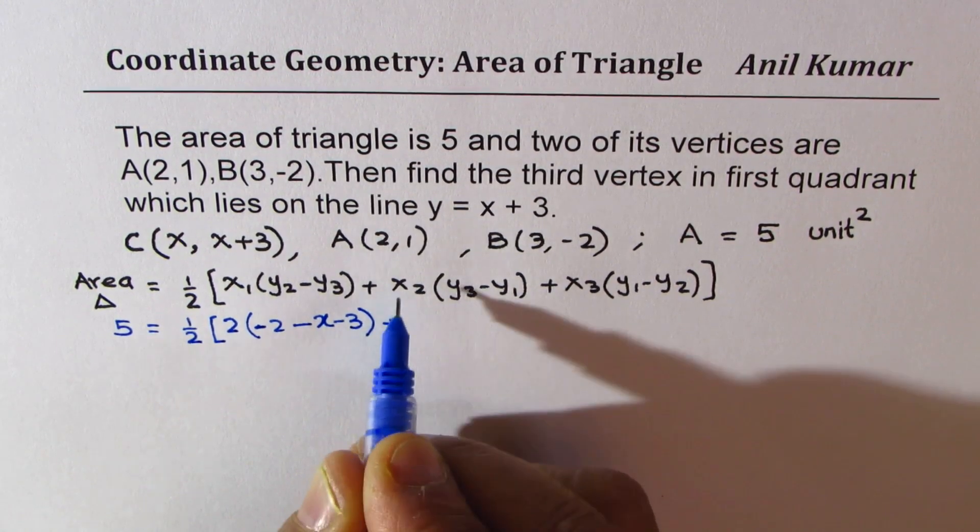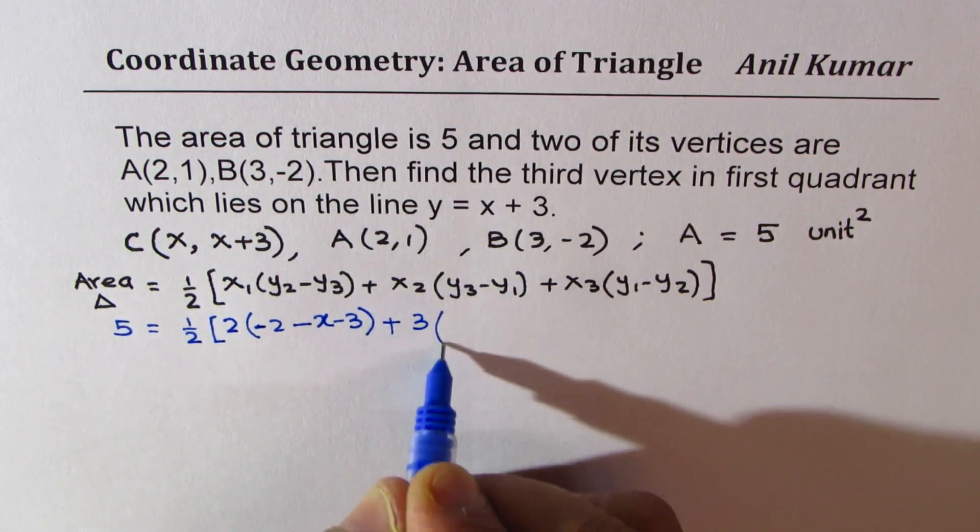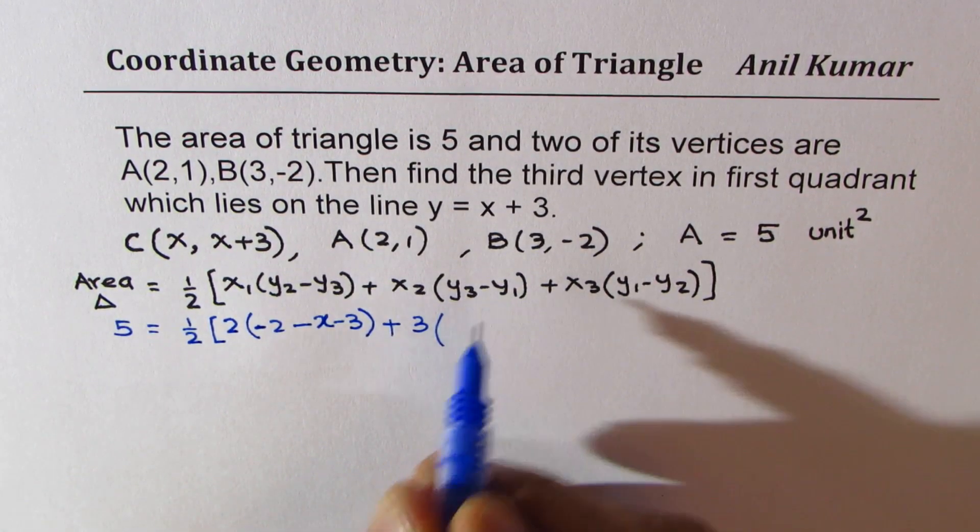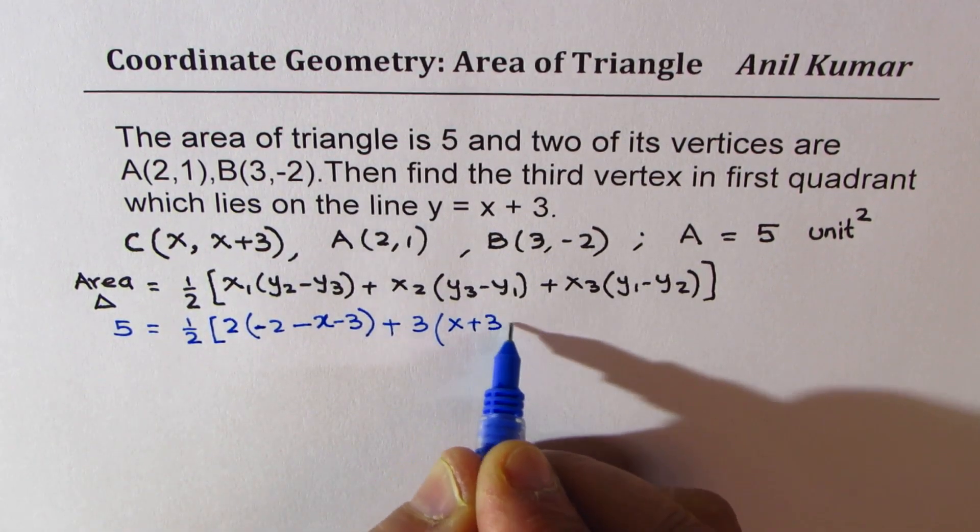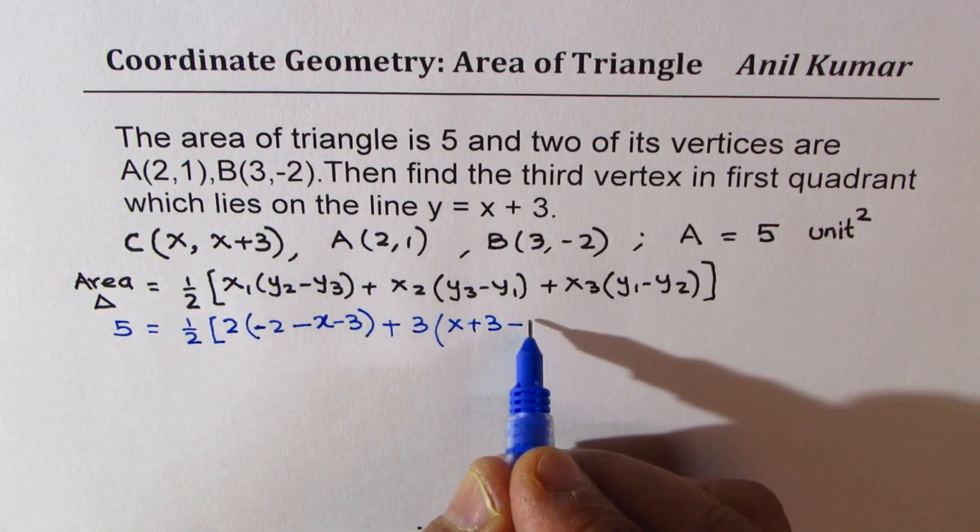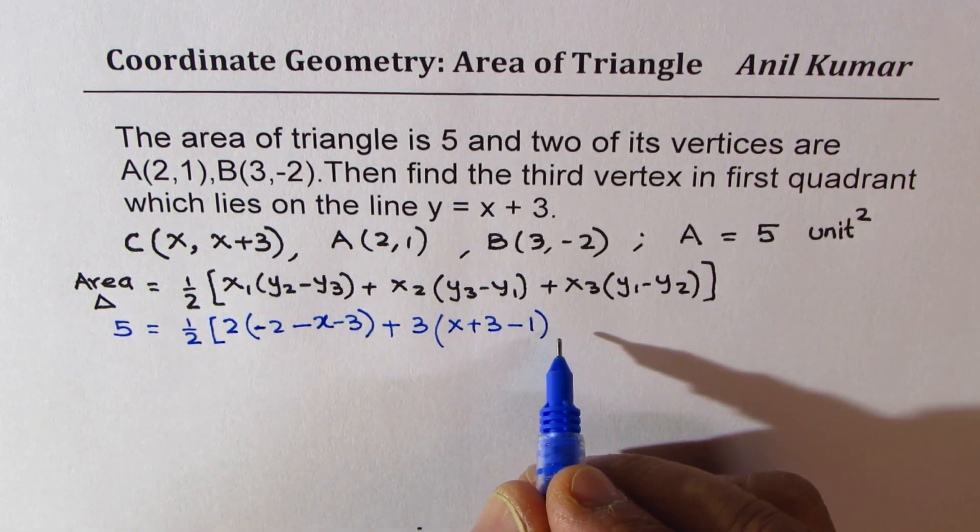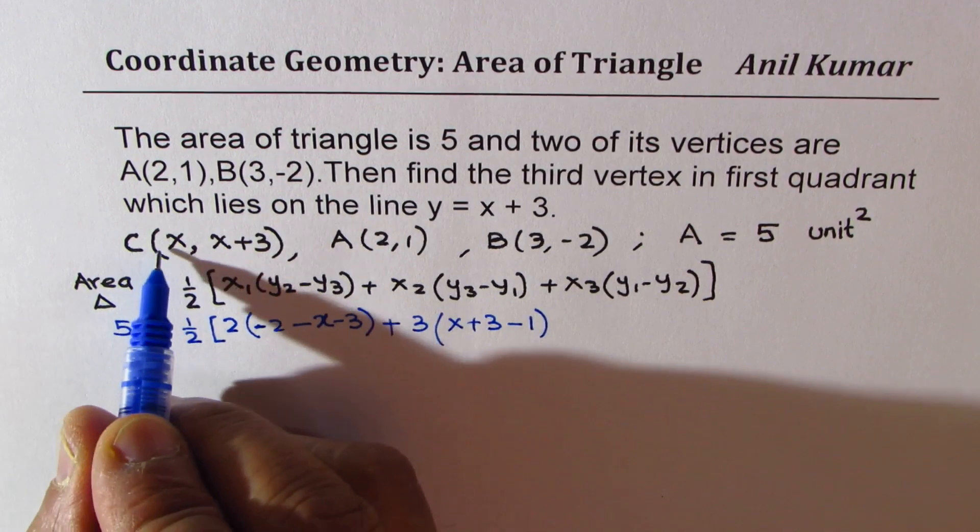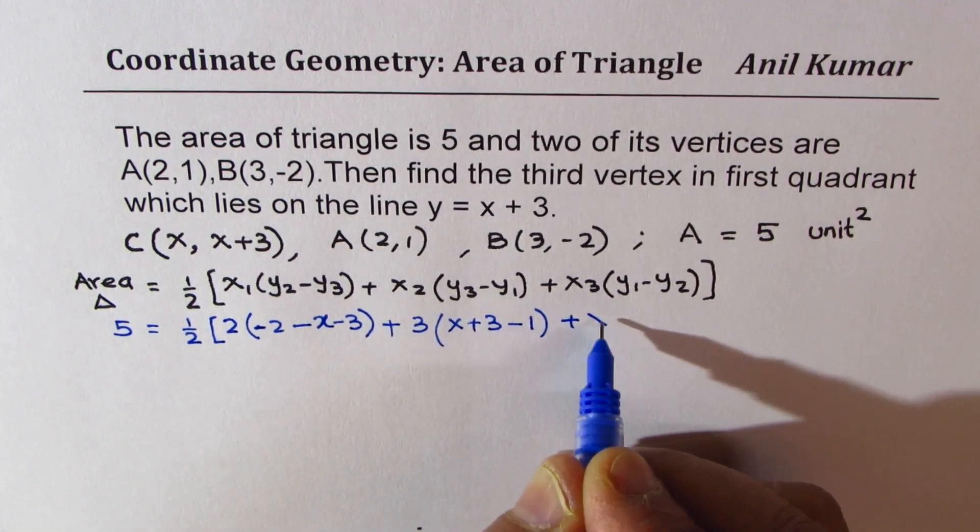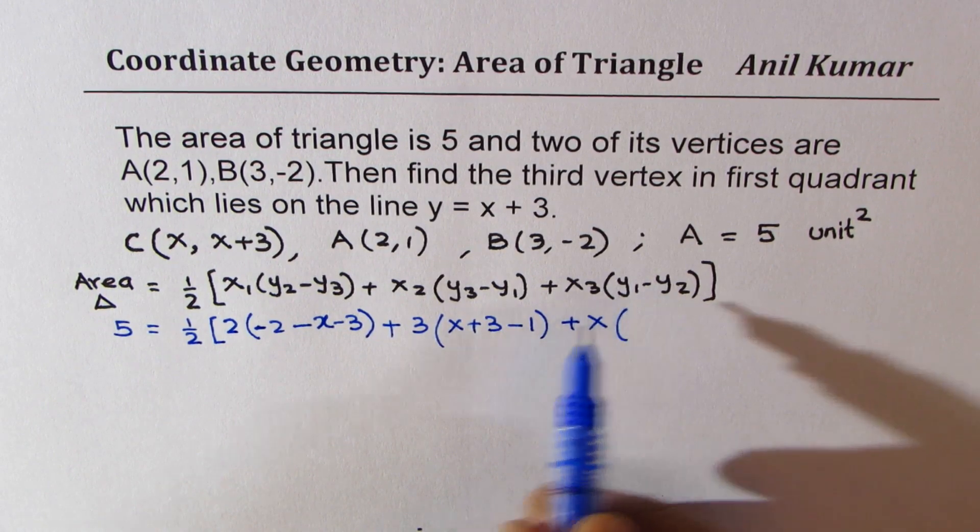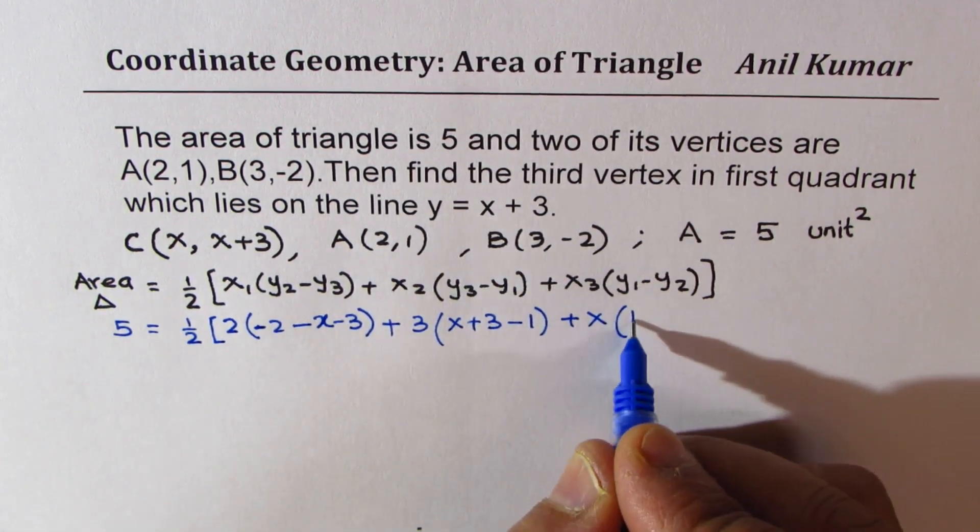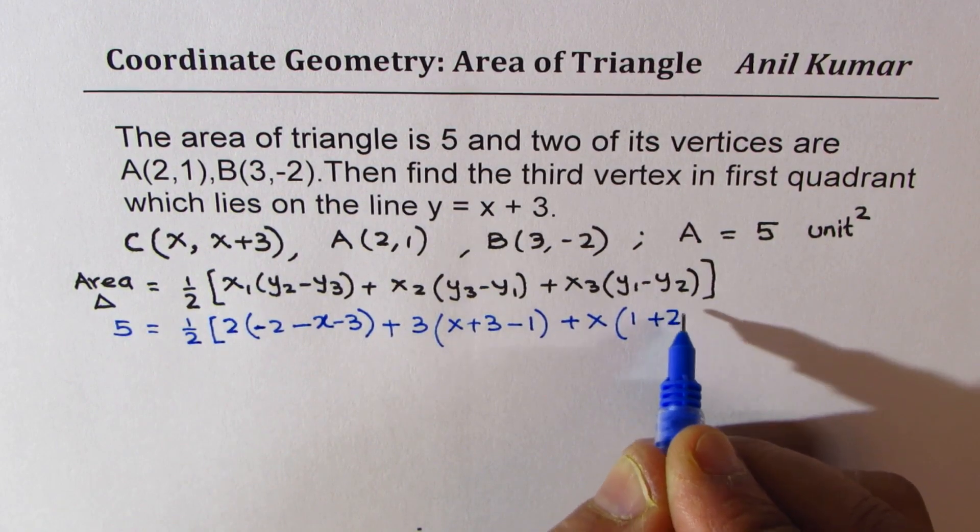y₂ - y₃, that means -2 minus, so that will make both of them negative, x - 3. Plus x₂ which is 3, y₃ - y₁ means this is my y₃ which is x + 3 minus y value of A which is 1. And now x₃ which is that point C, x value times y₁ - y₂ which is 1 minus, minus of -2 will make it plus 2.